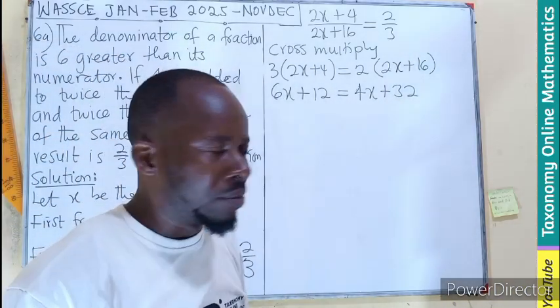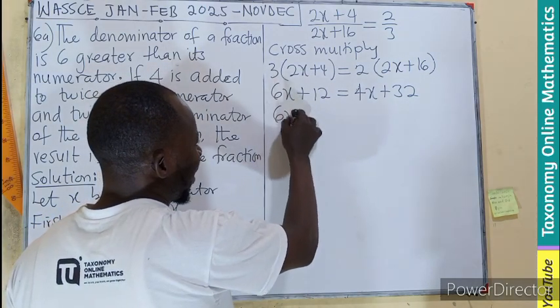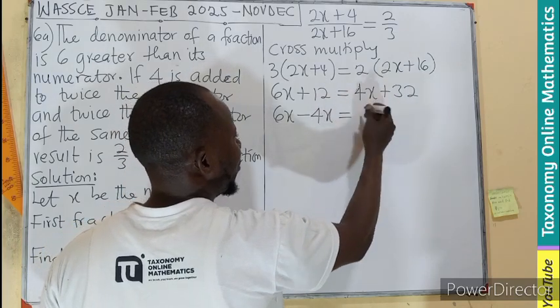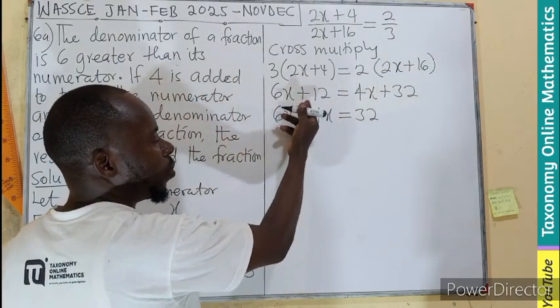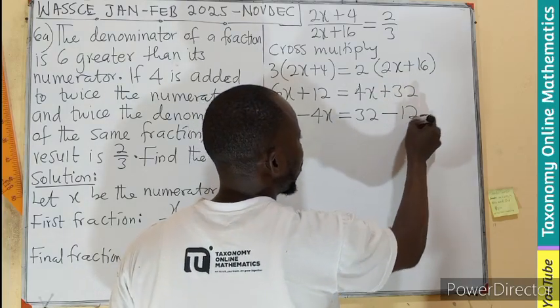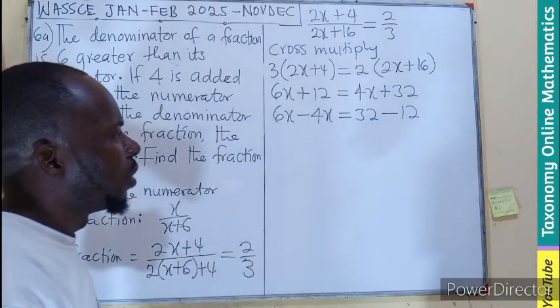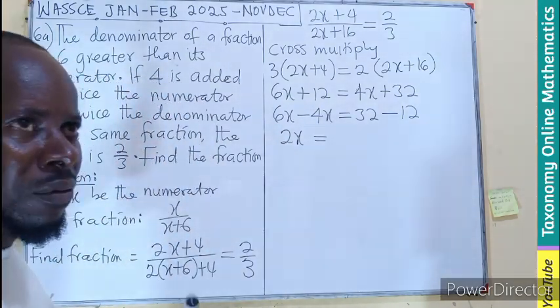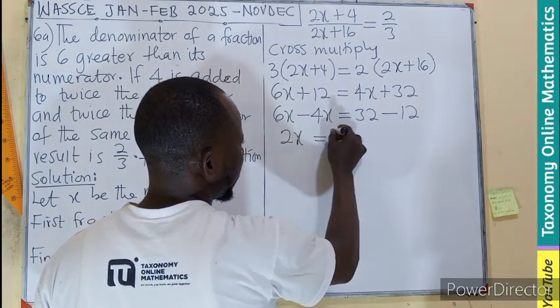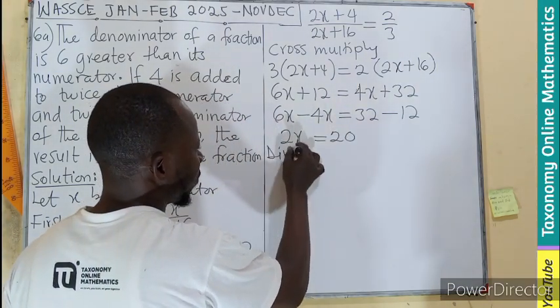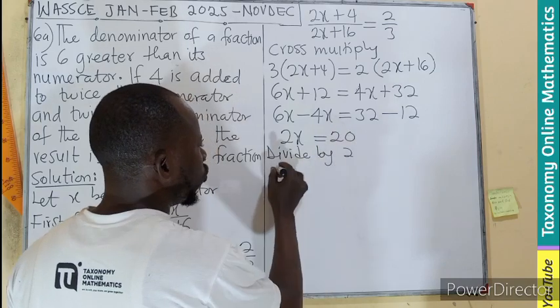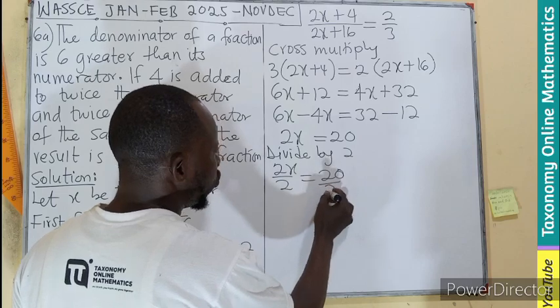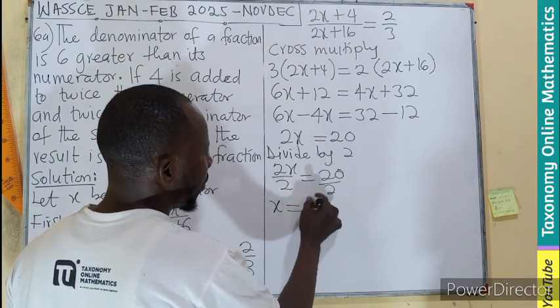We need to group like terms. We maintain the 6x here. We transpose the positive 4x to become negative 4x. Maintain the 32, transpose positive 12 to become negative 12. 6 minus 4 give you 2x. 32 minus 12 gives us 20. We divide by 2, meaning 2x over 2, 20 over 2. That makes x become 10.